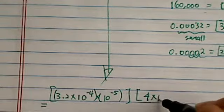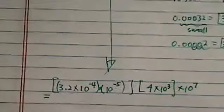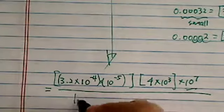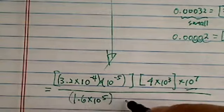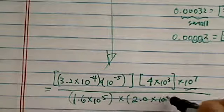Second number, I have four times ten to the third times ten to the seventh. Divided by one point six times ten to the fifth, that's one number, then times two point zero times ten to the minus five.